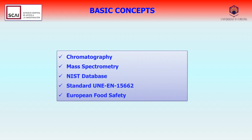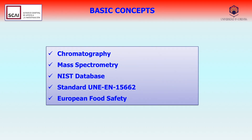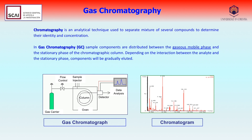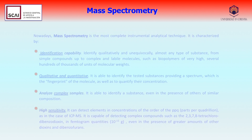Before proceeding to the analytical assay, we will explain some basic concepts necessary for a better understanding. Chromatography is an analytical technique in which chemical compounds are separated to determine their identity and concentration. In the case of gas chromatography, or GC, the compounds are separated in the gaseous phase.